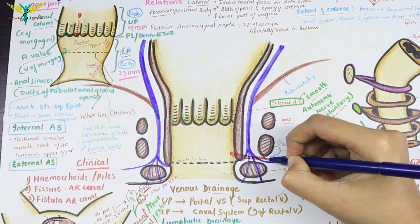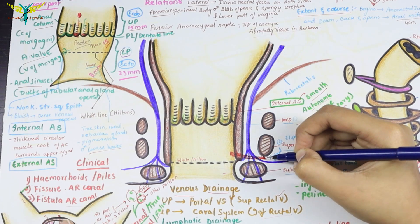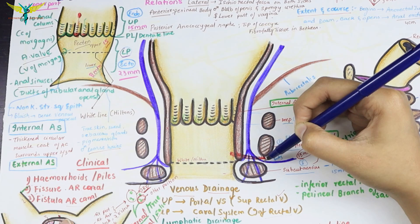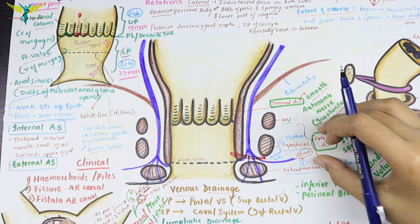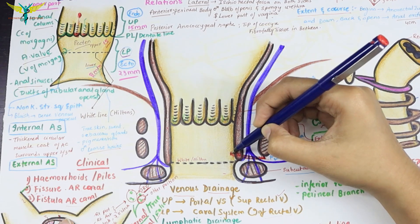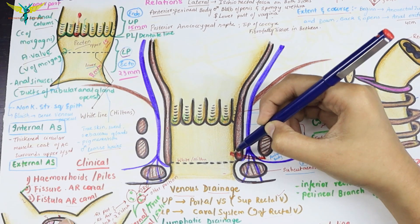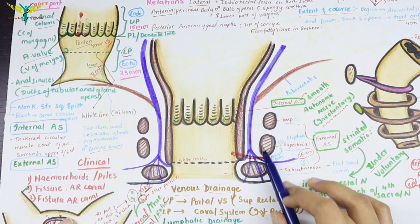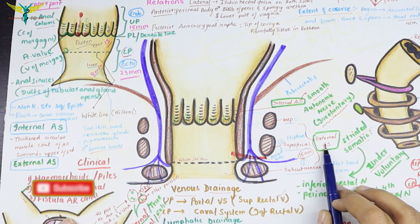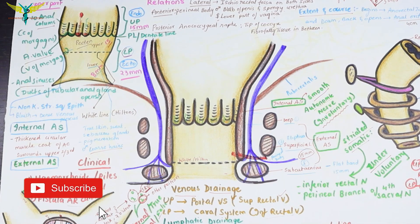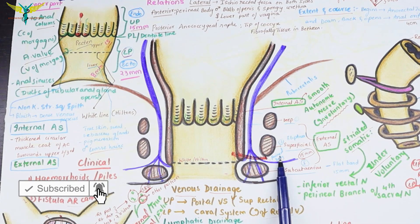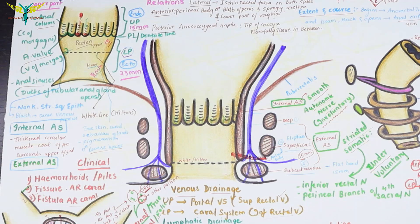The most common form of fistula originates from the superficial part of the external anal sphincter, passing from inside to outside. This is the most common site for fistula formation.